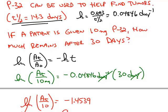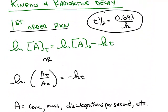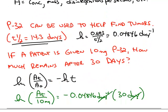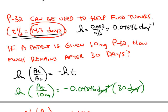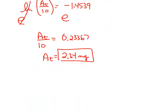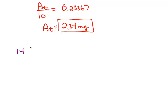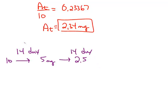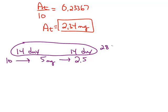The nice thing about first-order kinetics is the half-life is constant — it doesn't depend on the amount. So if this isotope had a half-life of 14 days and we're looking at a time period of 30 days, we can do a quick check: after 14 days, 10 milligrams should end up being 5 milligrams. If we wait another half-life of 14 days, 5 milligrams will drop down to 2.5 milligrams. This is at 28 days, so 2.5 milligrams. We waited 30 days, so the amount will be just a little bit less — which is consistent with our calculated answer of 2.34 milligrams.